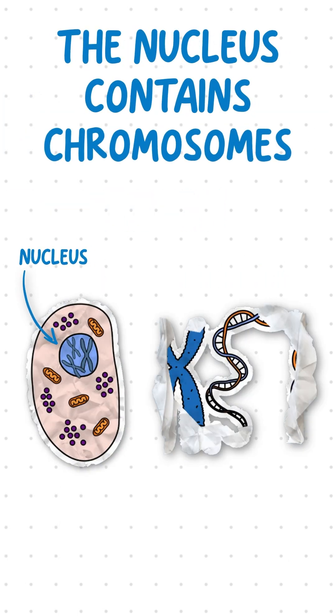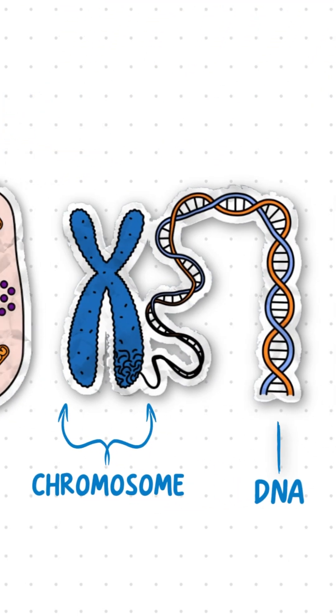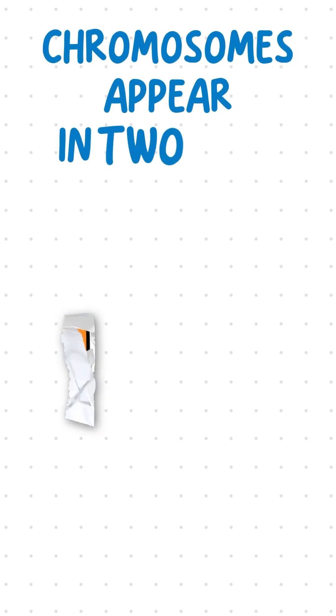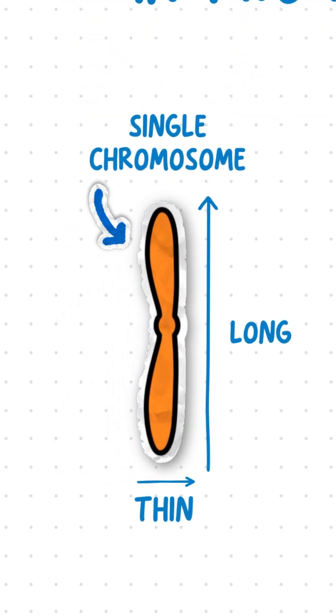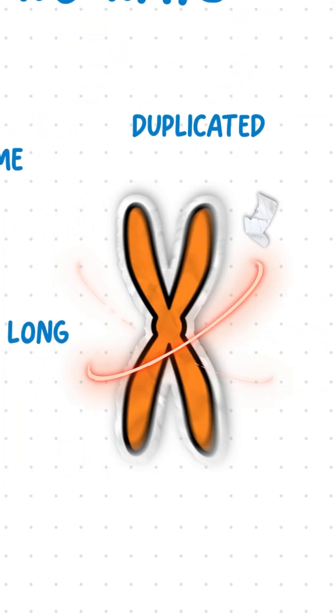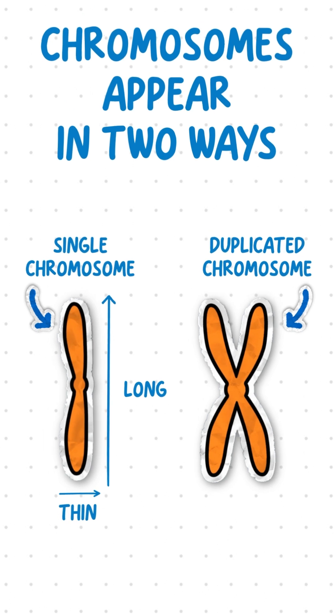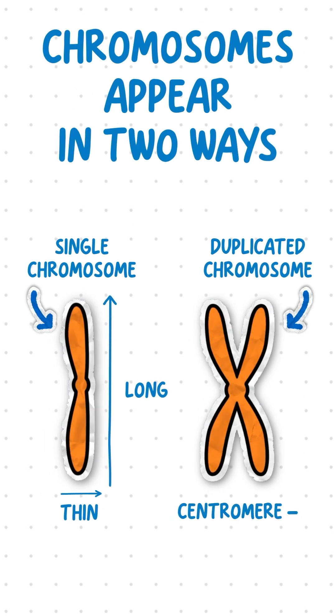The nucleus of eukaryotic cells contains chromosomes which are made of DNA. Chromosomes appear in two ways: as a single, long, thin structure, or an X-shaped duplicated structure, with chromosome copies joined at the centromere.